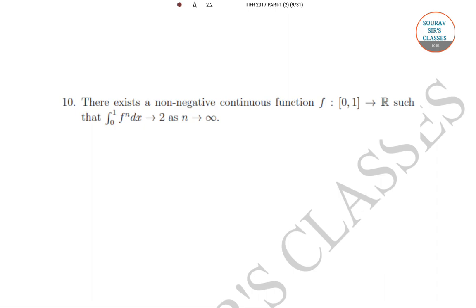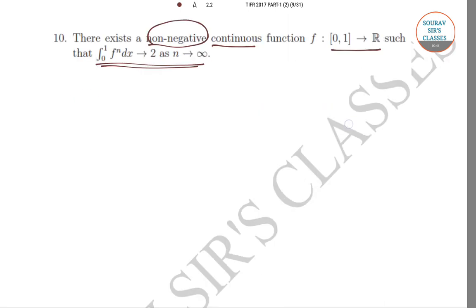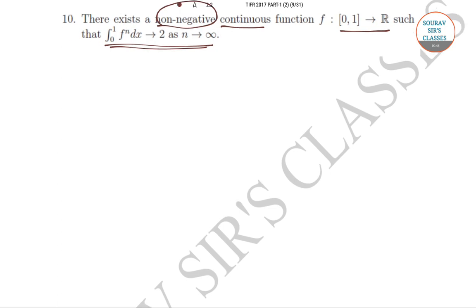Hello students, welcome to Services Classes. Today we'll be solving Part 1 of the TIFR Maths Paper of year 2017. We'll be solving question number 10 from the same paper. In question number 10, it has been said that there exists a non-negative continuous function f which goes from the closed interval [0,1] to the real number set R, such that the integration from 0 to 1 of f^n dx tends to 0 as n tends to infinity. This is the given condition and we have to check whether the statement is true or false.